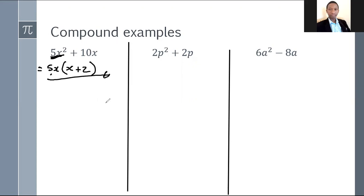Same thing here, guys. You can see 2 as well as p. So in other words, 2p is the highest common factor. 2p squared divided by 2p is a p plus 2p divided by p is a 1. That's about it.